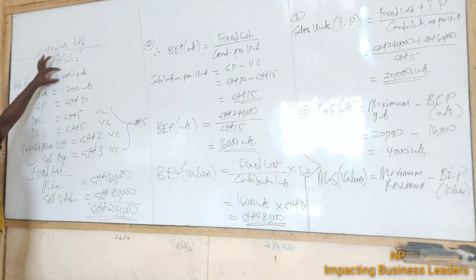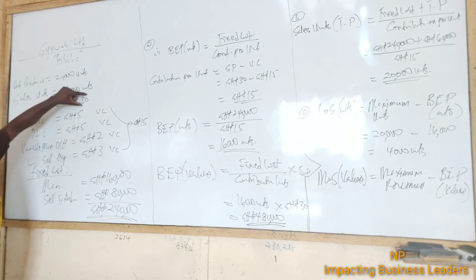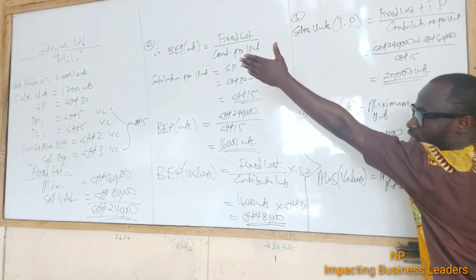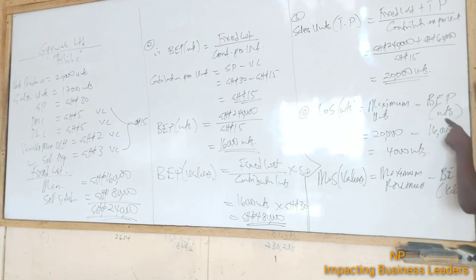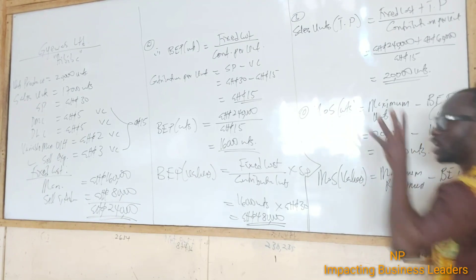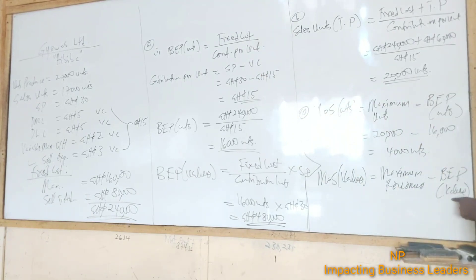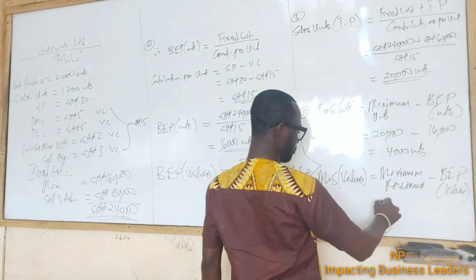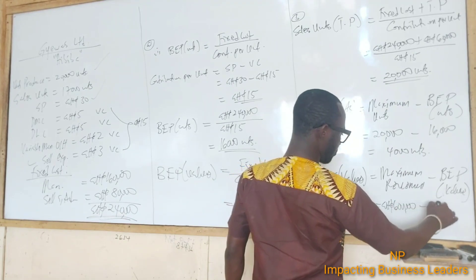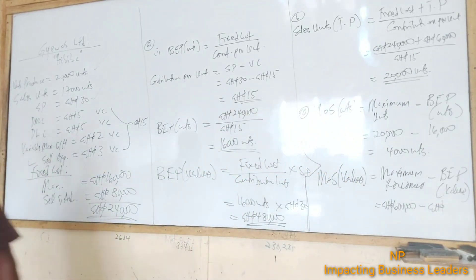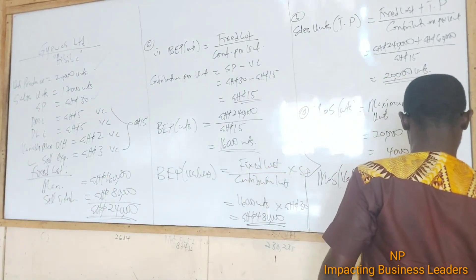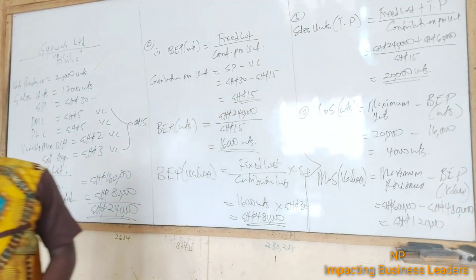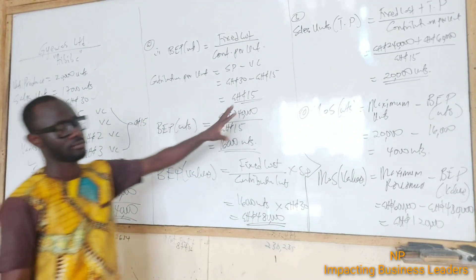To get maximum revenue, we multiply the units produced — 20,000 — by the selling price of $30, giving us $600,000. Then subtract the break-even point in value of $480,000, giving us a margin of safety in value of $120,000. So that is Parts A, B, and C — 12 marks total.